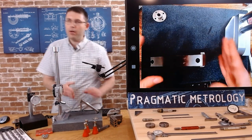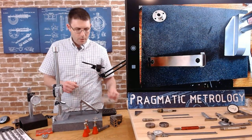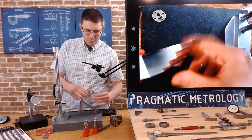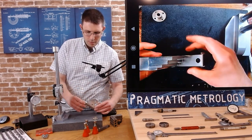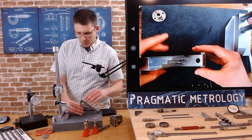Alright, so we've got our 40 degree angle. Now to take our datum B surface and put it very gently on the sine bar like so. Don't want to knock anything over.